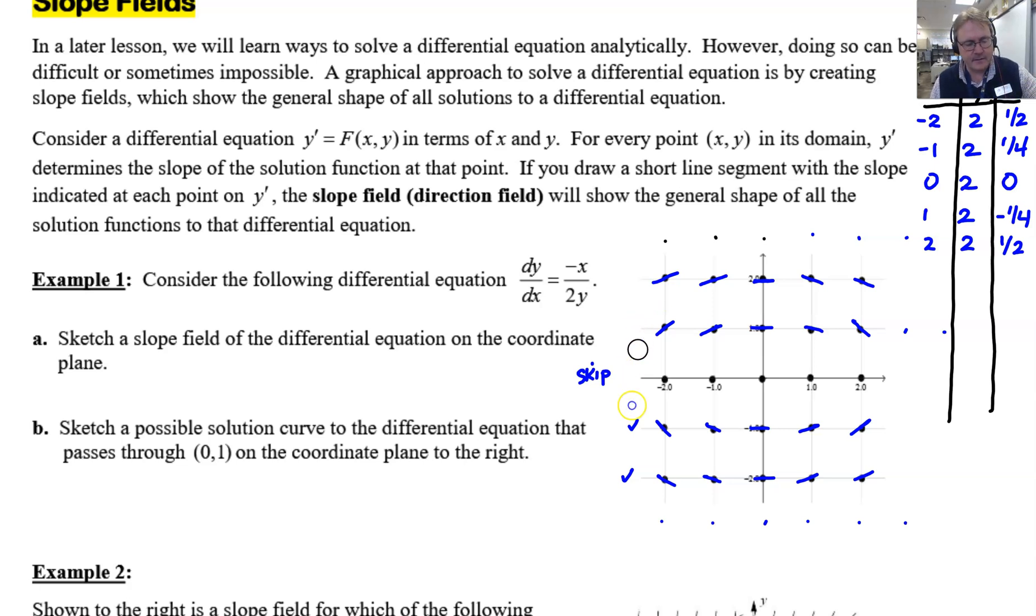And then this guy is a negative one-fourth to kind of mimic the positive one-fourth that we had up there. So hopefully we are in somewhat agreement there as I get rid of those numbers, and we can now focus our attention on tackling this x-axis group that we skipped. So on the x-axis I want you to notice that you have a zero for the y-value. Every one of these y's are going to be a zero. So therefore it does not matter what the top is. I know the temptation is to draw a vertical segment.